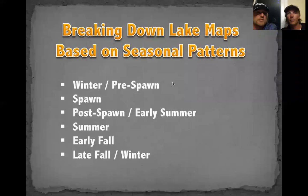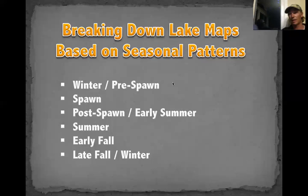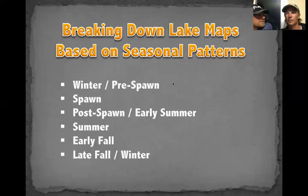Nick asks: what's the worst place you've come across in terms of map accuracy? Mostly rivers — a lot of the backwater areas the mapping crew can't even get into at certain times of year. There are big backwaters they literally can't access. Shallow river systems are the worst for mapping, but you can't blame them — if they go there in August, the stuff you'd be fishing in March and April when water's high is literally dry land.